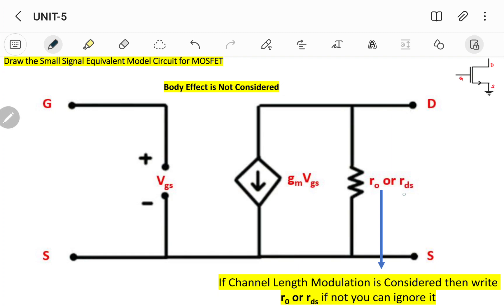We are left with one more term which is R0 or RDS. As this resistance is present between drain and source, you can write it as RDS or else you can write it as R0. But this is up to you: whether if you are considering channel length modulation, then only you can include this particular resistor. If not, you can ignore this particular part. So this is the final small signal equivalent model for MOSFET whenever body effect is not considered.